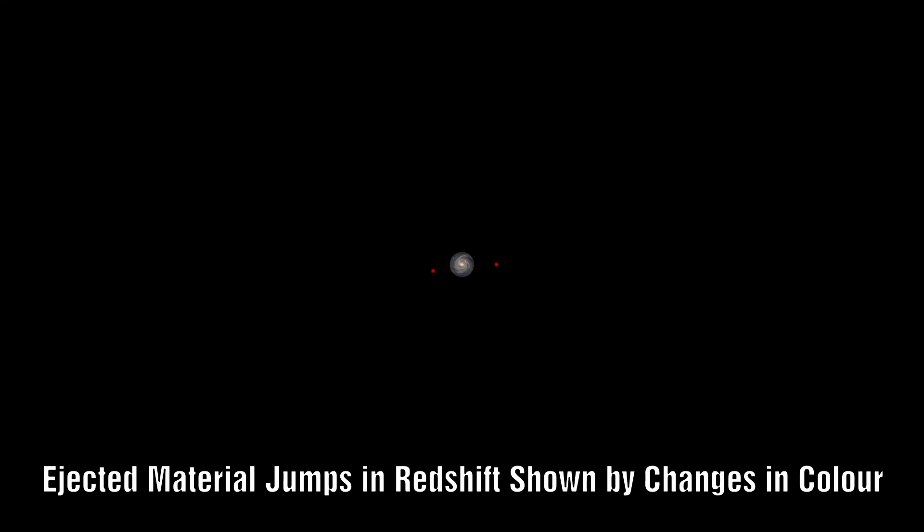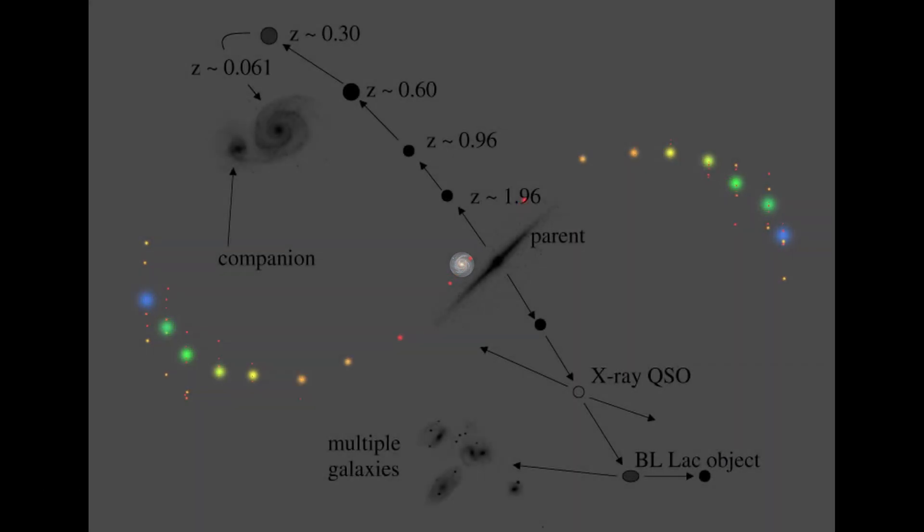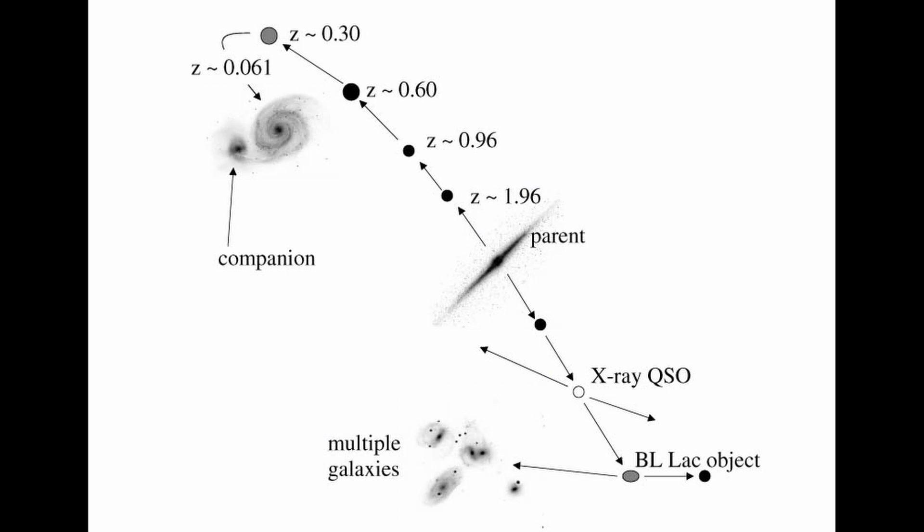Arp believed that galaxies could occasionally eject objects which might eventually turn into quasars. These would continue to move outwards, which would explain the curious alignment of quasars across galaxies. Slowly these quasars would turn into dwarf galaxies. When the quasar is initially ejected, it would be highly energetic and would have a much higher redshift. Slowly as the energy levels decrease, so would the redshift. This basically means that when we observe objects with higher redshift, they might be highly energetic and at an early stage of their evolution.